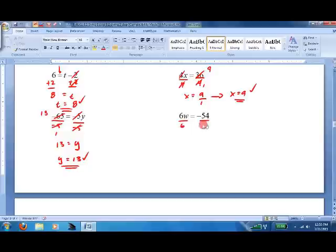Divide by 6. Divide by 6. They cancel. 1 and negative 9. W equals negative 9. Notice I did not write the 1 underneath it. As you do these, you can definitely start to shortcut your work to make things a little bit more streamlined. But always check. 6 times negative 9 is negative 54.